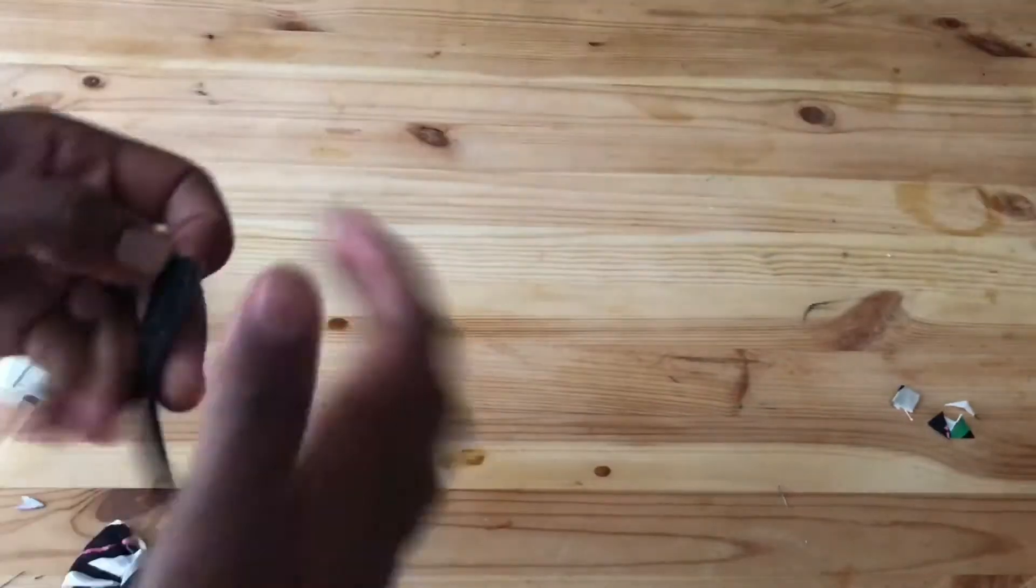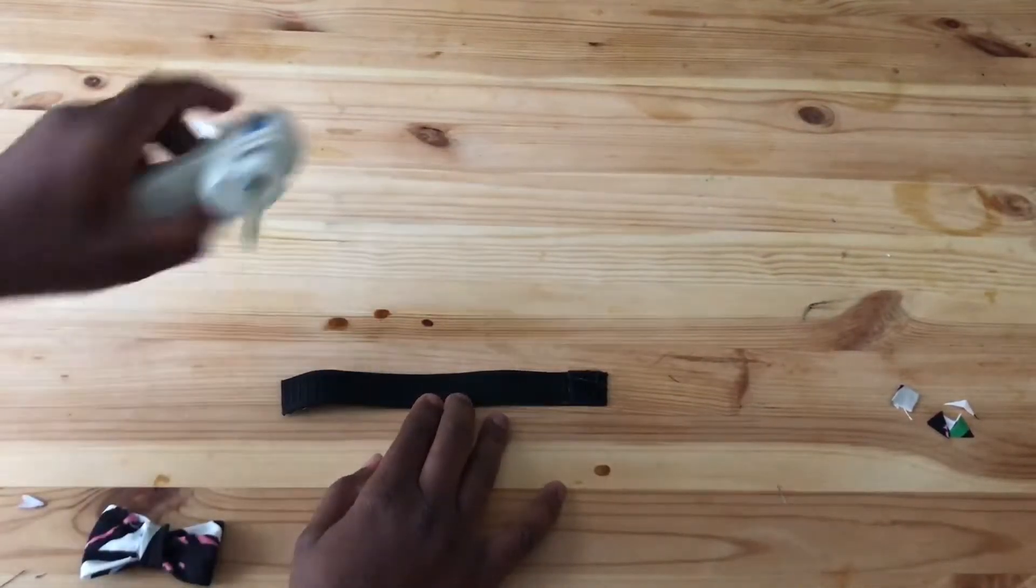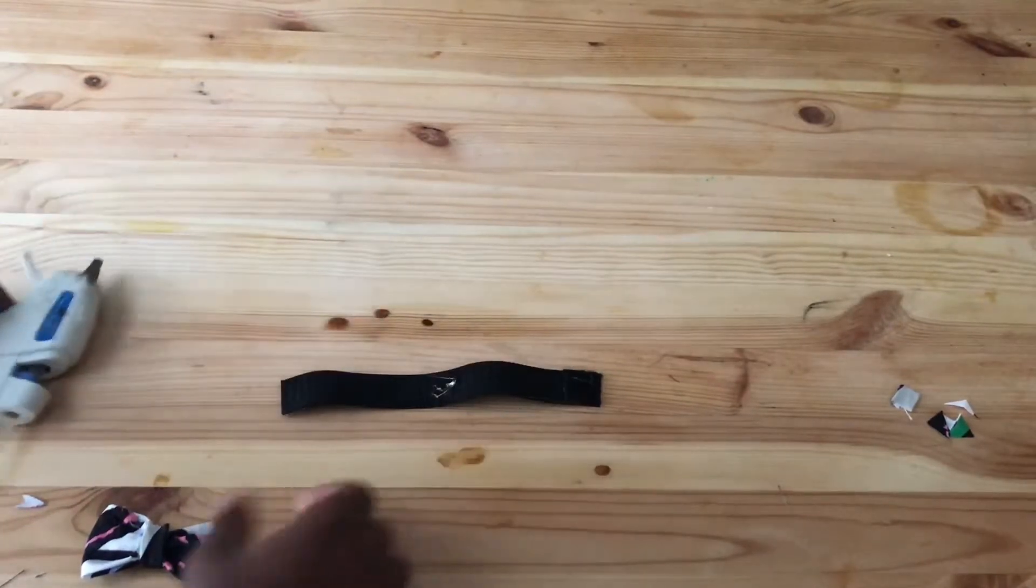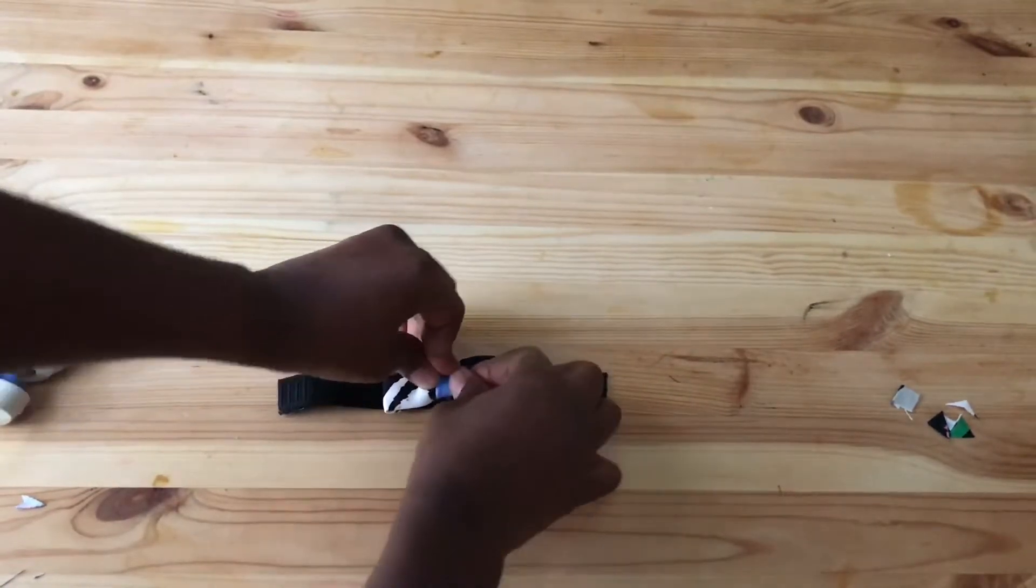Last but not least, you're going to hot glue your bow to the middle of the elastic, right in the center. Press it hard.